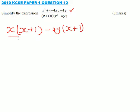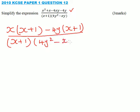We leave the numerator the way it is for the time being, so we have x plus 1, and we have 4y squared minus xy.